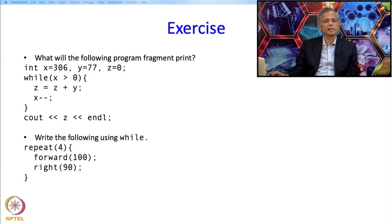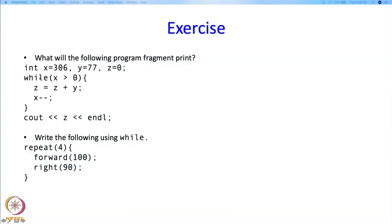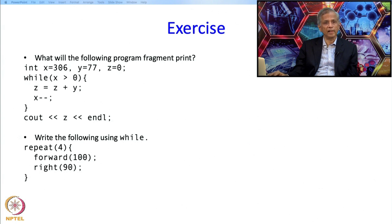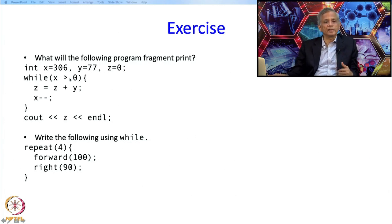Here is an exercise. x is 306, y is 77, z is 0, and we run while(x > 0) { z += y; x--; }. What is printed at the end? Rather than executing by hand, do one or two iterations, guess the pattern, and determine what value z holds when the loop finishes.